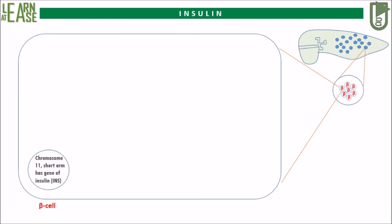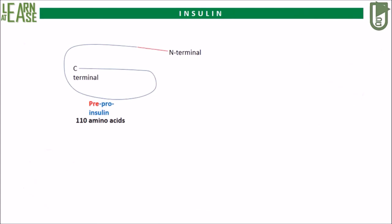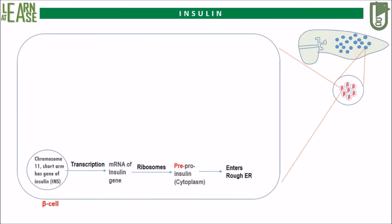This gene is also abbreviated as INS. When this gene is transcribed, it produces mRNA of pre-pro-insulin, which will then be translated by eukaryotic ribosomes to produce pre-pro-insulin. This is a short peptide containing 110 amino acids. On its N-terminal there exists a very short peptide known as the signal peptide, represented here in red color.